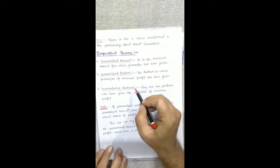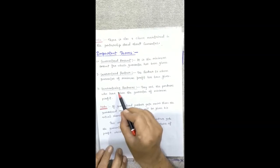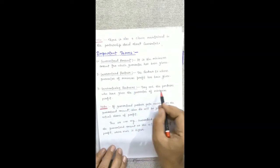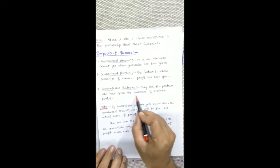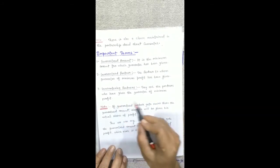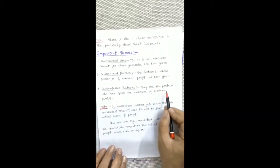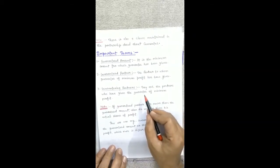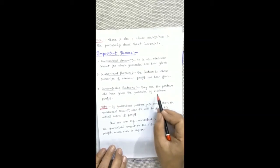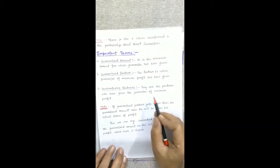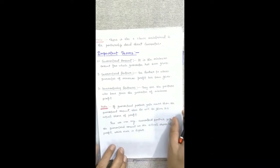The third term is 'guaranteeing partners' — they are the partners who have given the guarantee of minimum profit. It means that if there is any deficiency, it is borne from the profits of these guaranteeing partners.